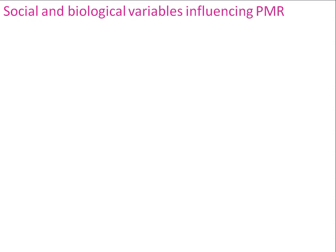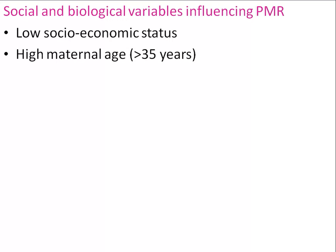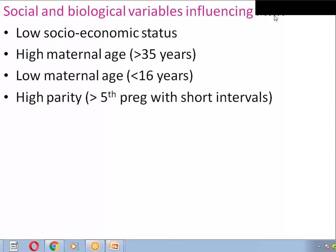Social and biological variables influencing perinatal mortality include: low socioeconomic status as the main cause, high maternal age (more than 35 years), and low maternal age (less than 16 years), as well as short birth spacing.